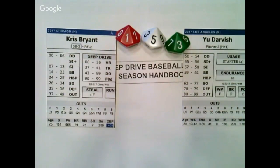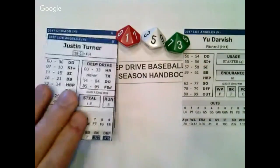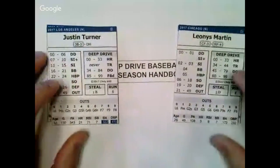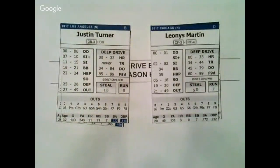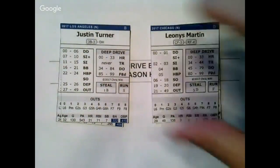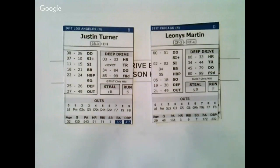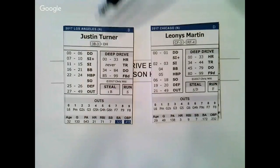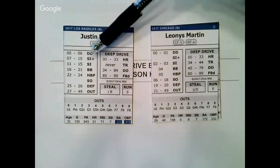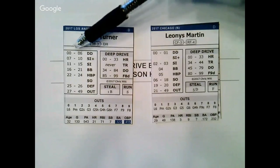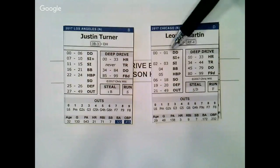Let's look at some player cards. Here we have two separate batter cards from Deep Drive Baseball. Even without looking at the player stat lines across the bottom of their cards, you can look at the ranges present on each card and get a pretty good feel for the differences between the two. One of these has seven Deep Drive readings on their card, 00 to 06, while the other has just two, 00 and 01.